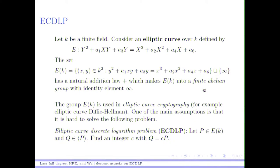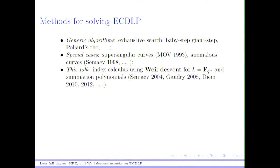So what is this problem? Let P be a point in the group, and Q be a point in the group generated by P. Then the question is: can you find an integer c such that Q = c·P? This is the elliptic curve discrete logarithm problem, and there exist many algorithms to solve it.